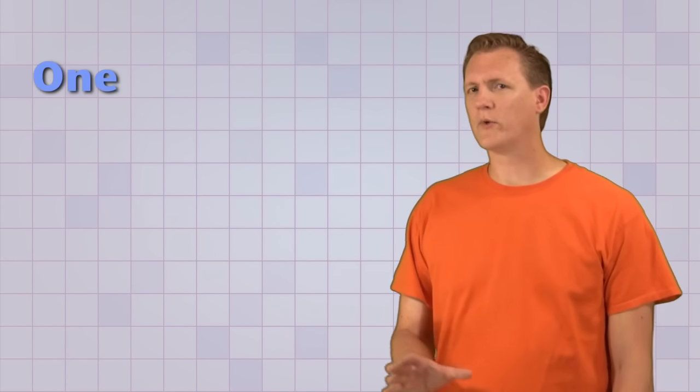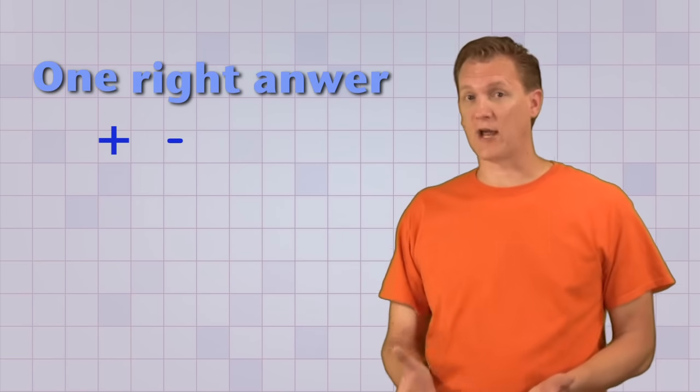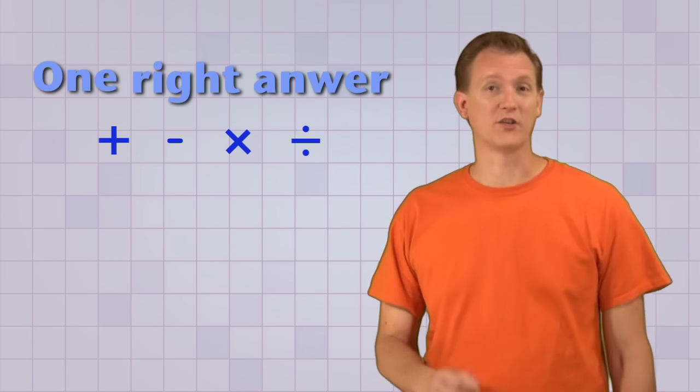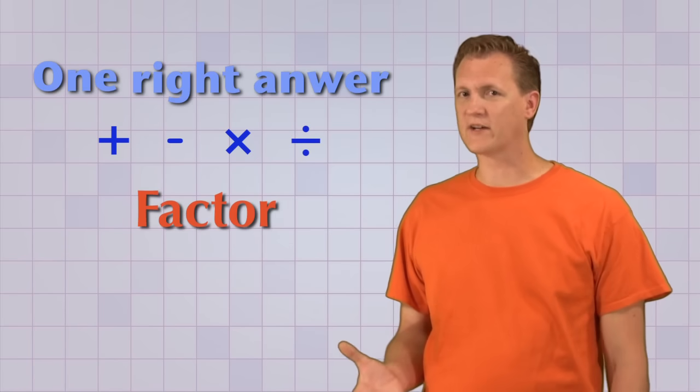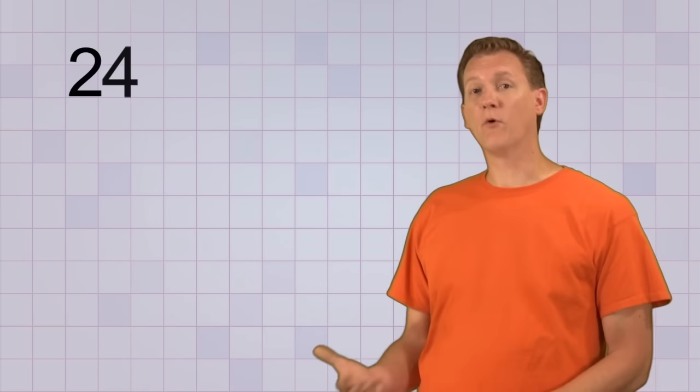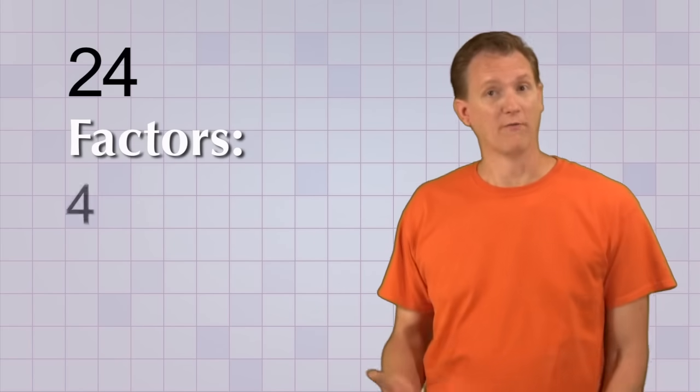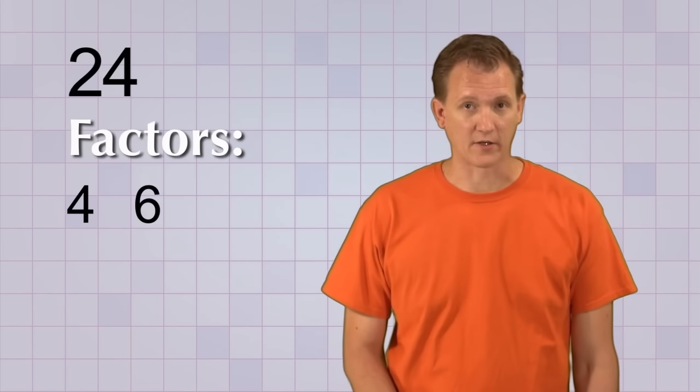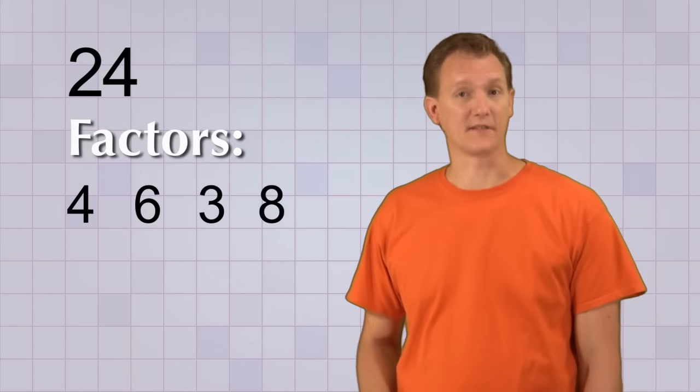You're used to having just one right answer. Because when you add, subtract, multiply, or divide, there is just one right answer. But when you factor, or unmultiply a number, you might find that there's more than one correct way you can do it. So we can see that the number 24 has quite a few factors. 4 is a factor, 6 is a factor, 3 is a factor, and 8 is a factor.